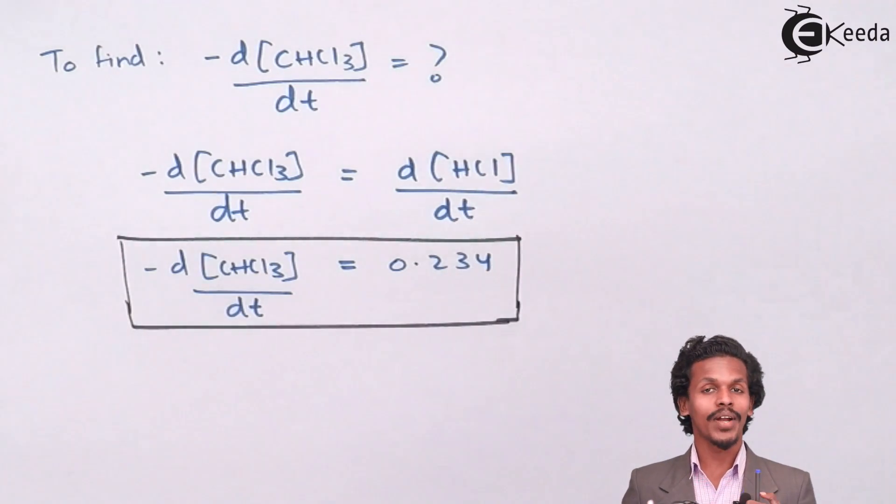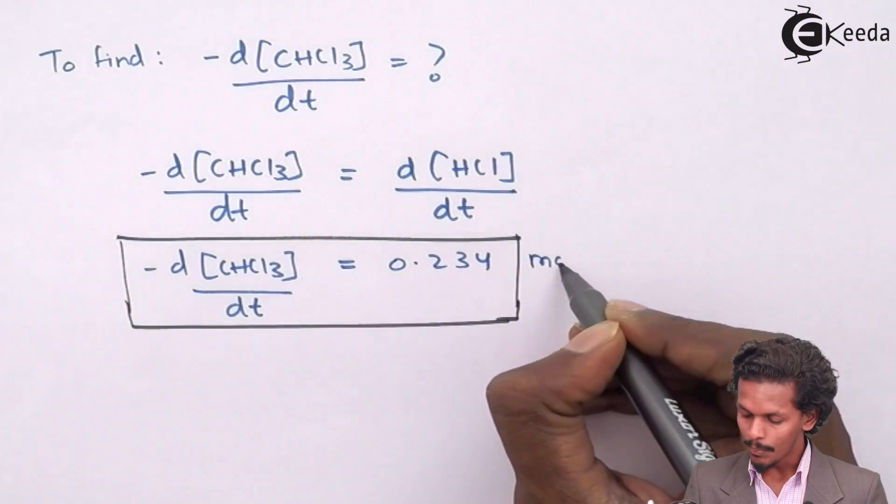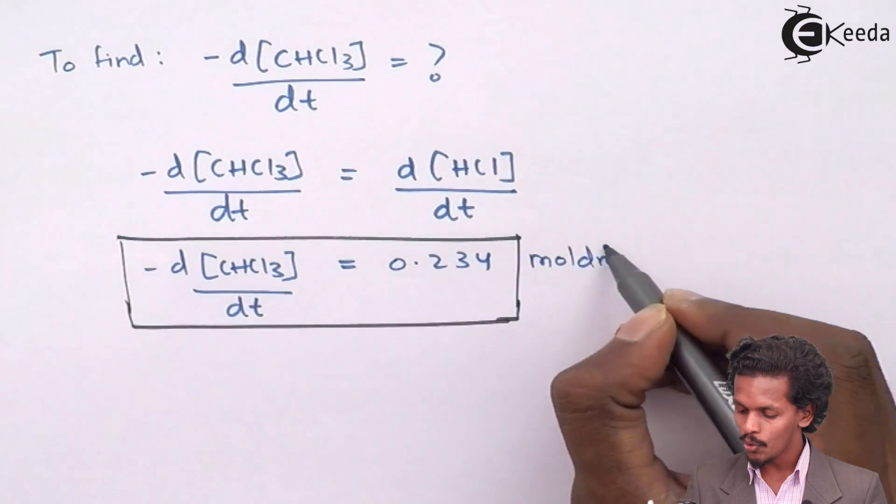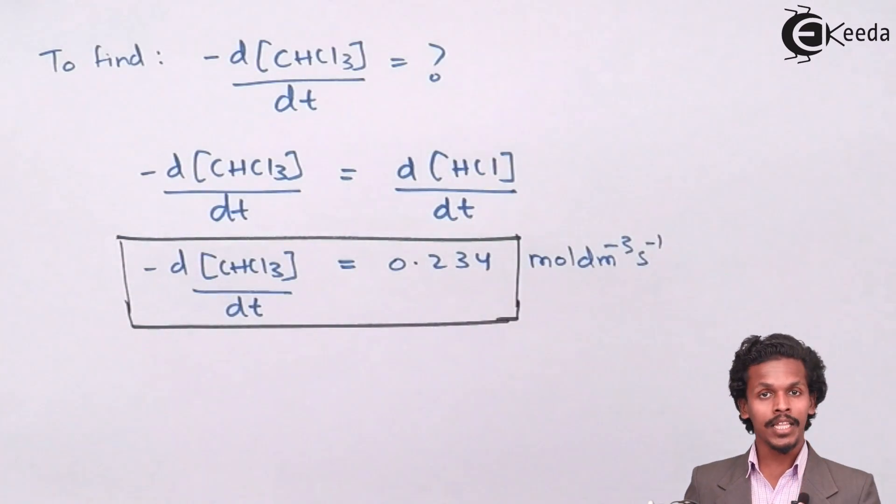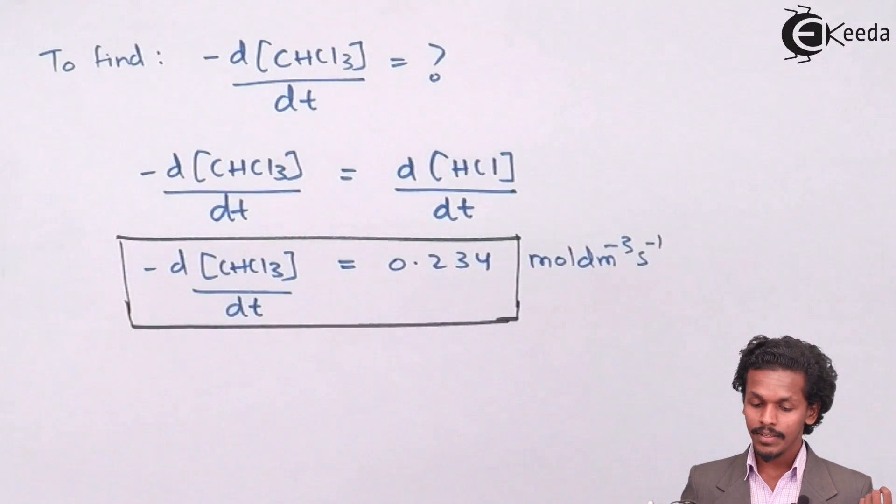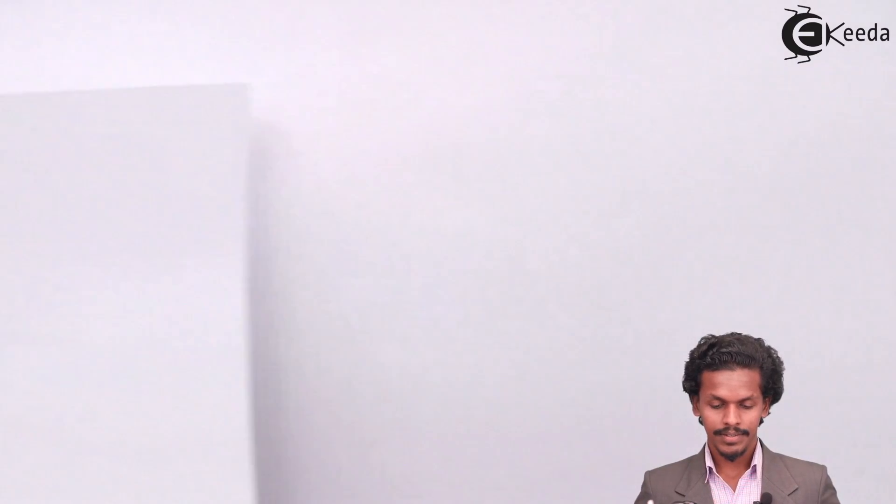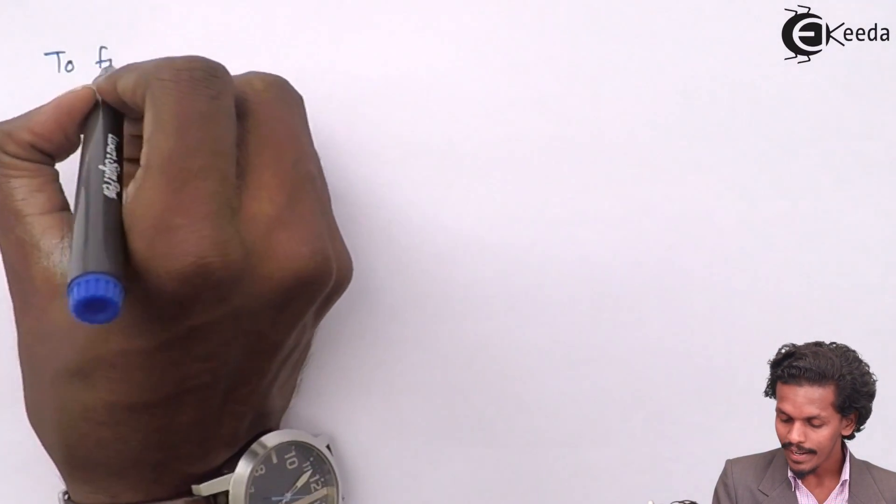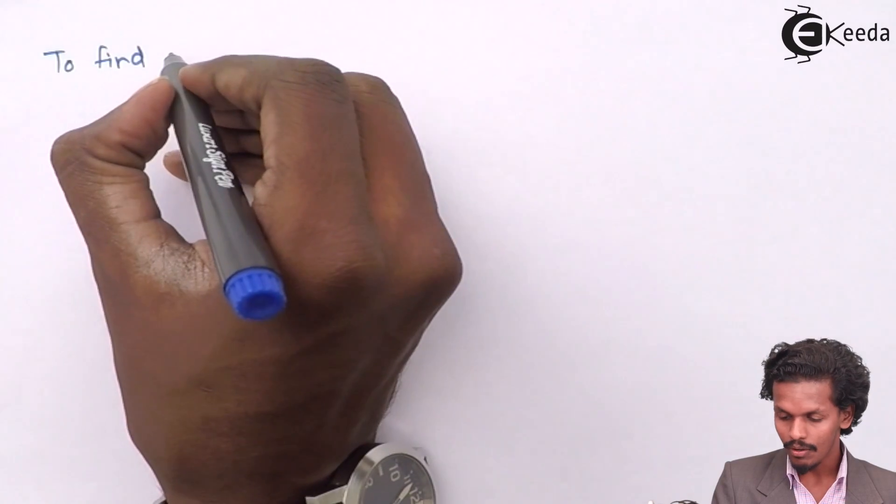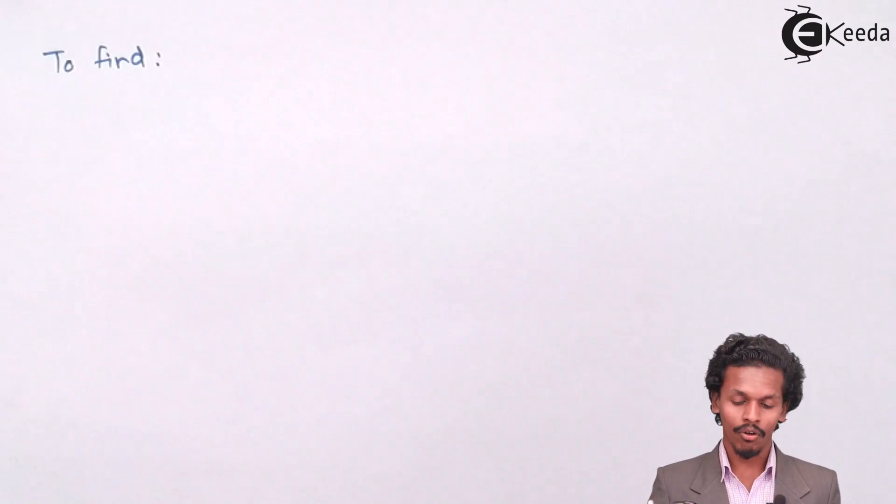the rate of consumption of CHCl3 is also given to us and that is 0.234. But we should not forget to write the unit of it and the unit of this will be moles per dm³ per second. So let us find out the another one that is for Cl2. It would be the same.